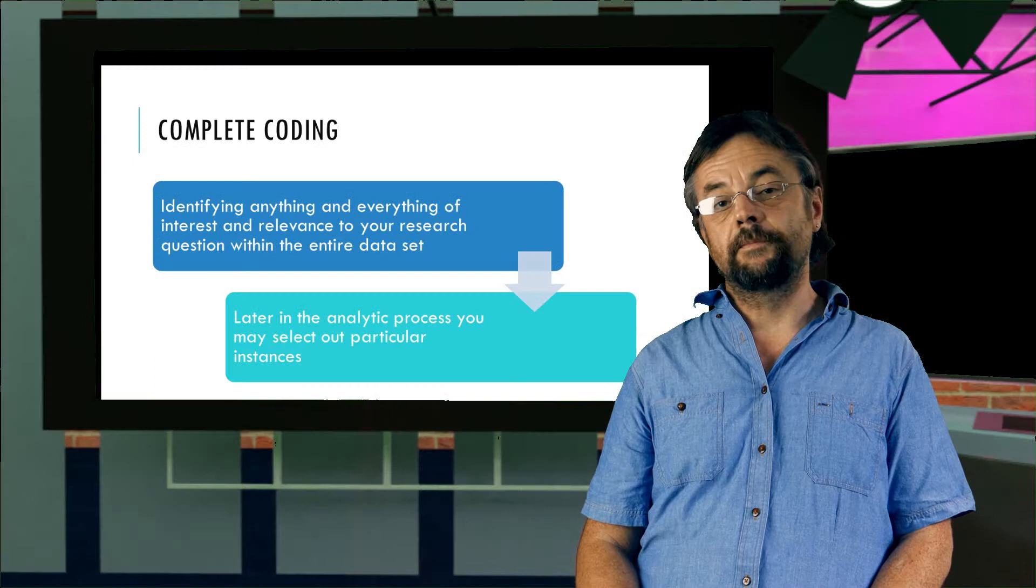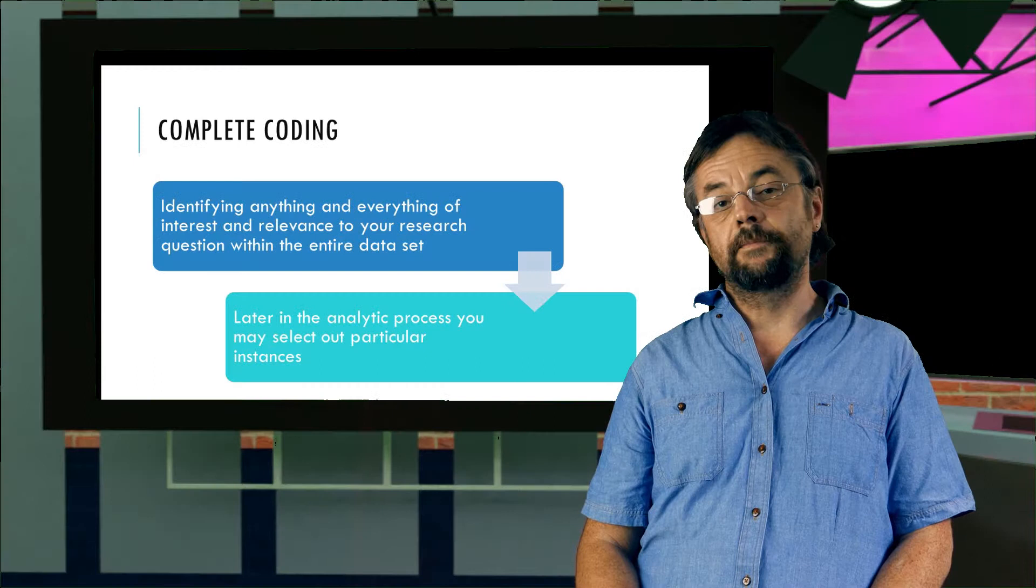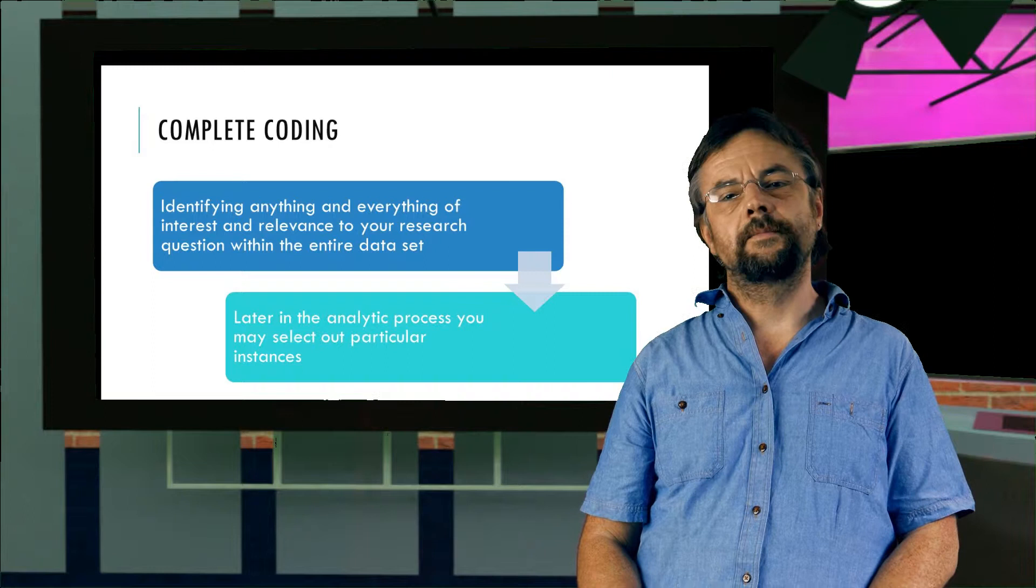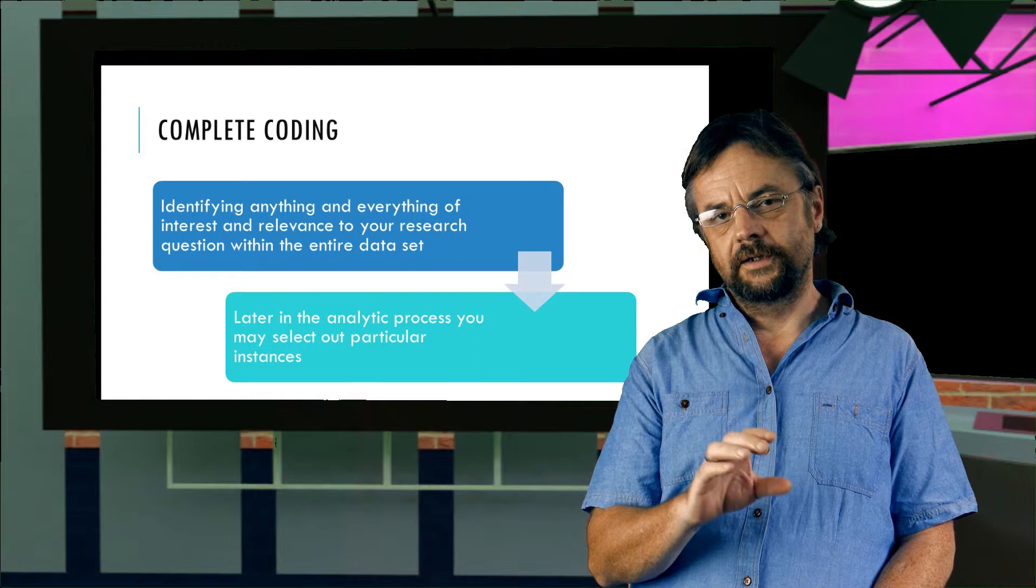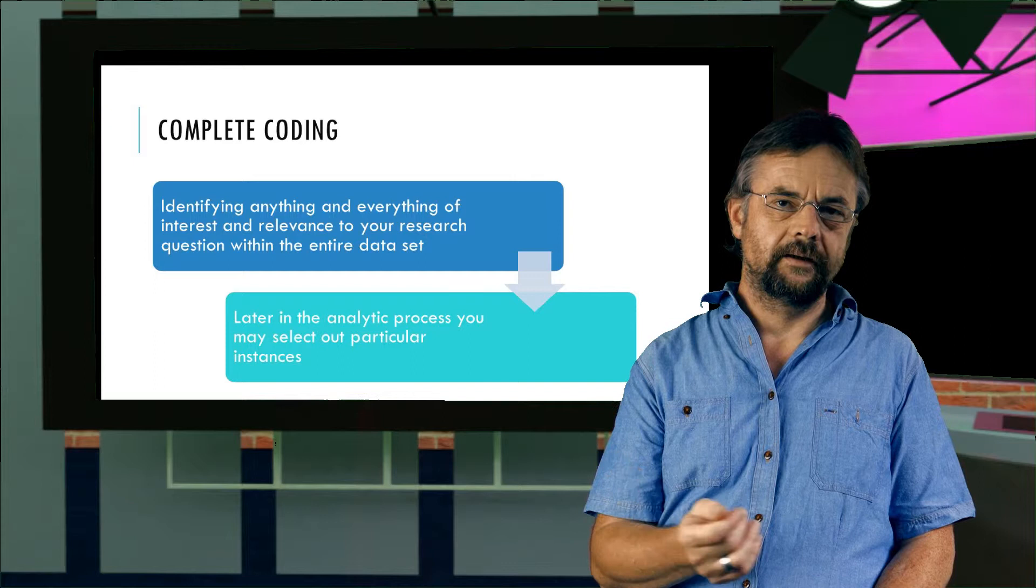Now, complete coding is where you code the whole data set in one go. You usually do this in smaller projects because you can do it all in one go when the data isn't too large. Now, after you've completed the coding for all the data, you may then go on to select parts for particular publications. Now, phase two is where you then start to reduce your coding to something that is manageable.